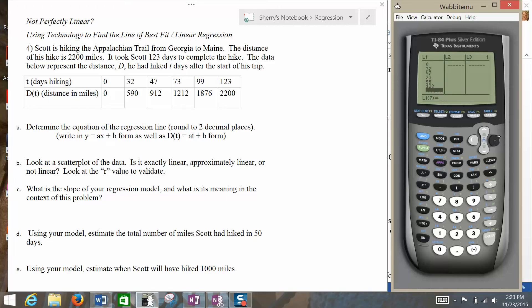Then, I'm going to arrow over here to L2 and I'm going to put in all of my distances in miles. 0, 590, 912, 1,212, 1,876, and then 2,200, which gets our friend Scott to the end of his hike.